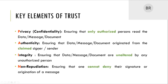The second property is authenticity. In the case of authenticity, if I am sending a message to you, you should be sure that I have only sent that message. If you are able to get that assurance, then authenticity is ensured. The third part is integrity — nobody should come in the middle and alter or modify the content of the message. That is called integrity.